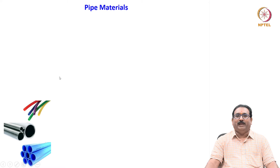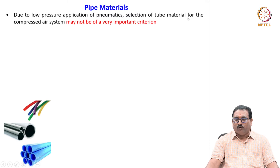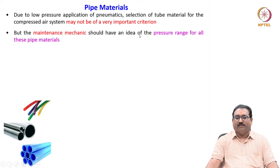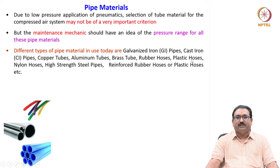Regarding materials for pipes and tubes: due to the low-pressure application of pneumatics — normal operating range is 6 to 10 bar, with people rarely exceeding 20 bar — the selection of tube material may not be a critical criterion. However, maintenance mechanics should know the pressure range for all pipe and tube materials. Different types in use today include galvanized iron (GI) pipes, cast iron (CI) pipes, copper tubes, aluminum tubes, brass tubes, rubber hoses, plastic hoses, nylon hoses, high-strength steel pipes, reinforced rubber hoses or plastic hoses, and many more.